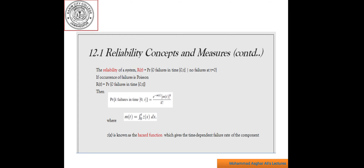The reliability of the system, R(t), equals the probability of zero failures in the time interval [0, t], given no failure at t equals 0. If occurrence of failures follows a Poisson distribution, then formally the reliability of a system R(t) is defined as the conditional probability: R(t) = P(0 failures in time [0, t] | no failure at time 0). Reliability theory as it applies to hardware systems has been developed significantly with the help of this formula.